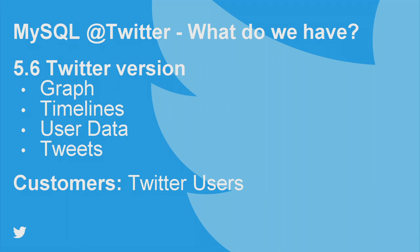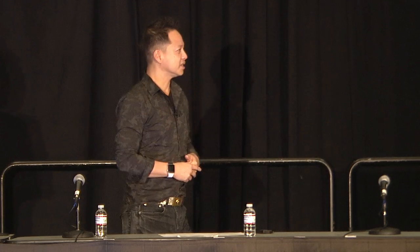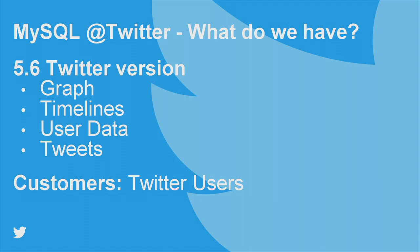For our 5.6 Twitter version, we store mostly our social graphs, timelines, user data, and tweets. This is the 5.6 version of MySQL that we still have on GitHub as open source, though I think we're going to close that. We don't have MySQL developers anymore at the office — they all moved to Oracle. Most of our users for this cluster are Twitter users; every time you tweet, it just goes to that cluster.